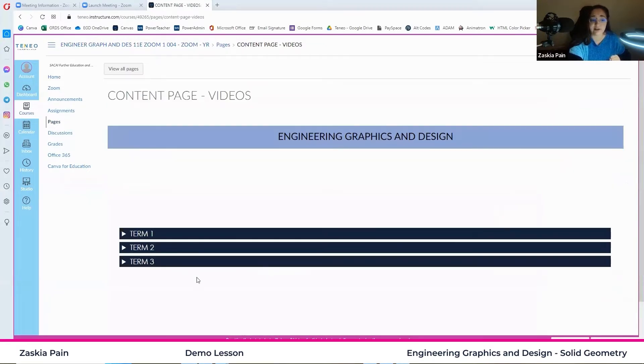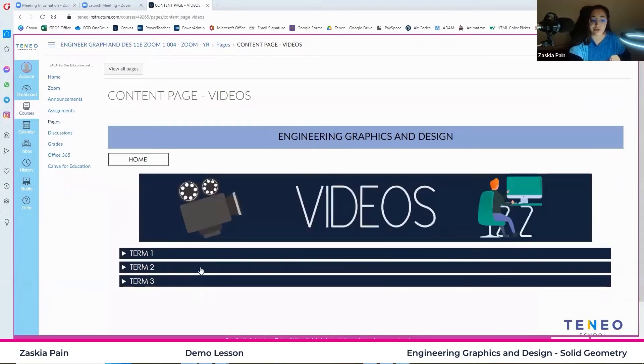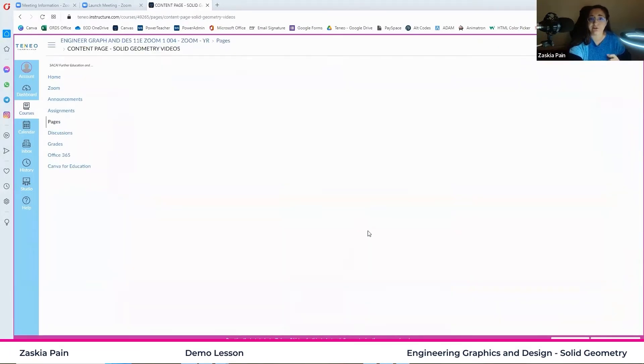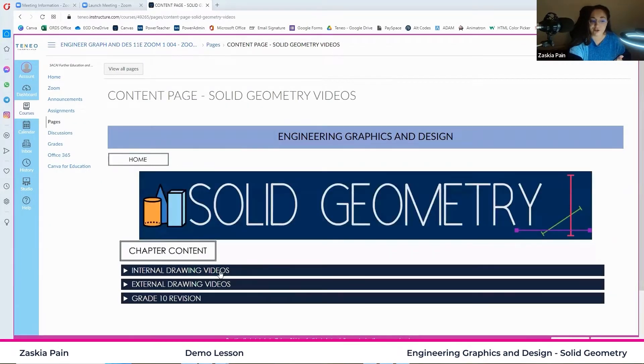And when you are there, you'll see three drop-down menus. You can open term two and you can go to solid geometry just to go and view some extra videos. So the first drop-down is internal videos. That is where you can watch videos that we've recorded for your grade. You have external videos, which are YouTube videos. And then also grade 10 revision because this is a grade 11 lesson.